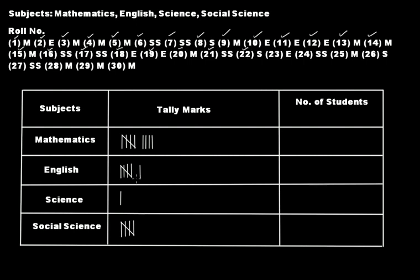Roll number 22 likes science. Roll number 23 likes English. Roll number 24 likes social science. Roll number 25 likes mathematics. Roll number 26 likes science. Roll number 27 likes social science. Roll number 28 likes mathematics. Roll number 29 likes mathematics. Roll number 30 likes mathematics. This completes the tally marks representation for the full list.